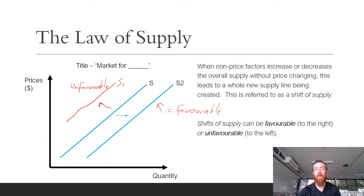Then we also have shifts of supply. So shifts of supply are caused by non-price factors that either increase or decrease the overall supply without the price changing, much like the demand. But in this case it's things that directly impact businesses without impacting price. So once again, similar to demand is that a favorable shift is always to the right and an unfavorable shift is always to the left.